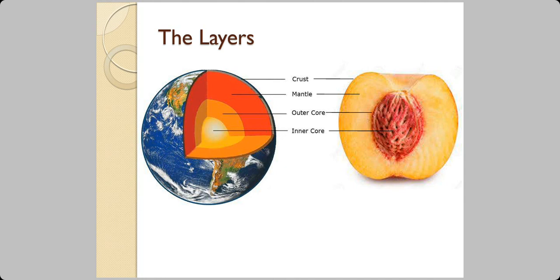We can compare the interior of the Earth with a fruit, let us say a peach or a plum or a mango. The outer skin is equivalent to the crust of the Earth. The pulp that we eat is comparable to the mantle of the Earth. And the seed or the stone is comparable to the core of the Earth.